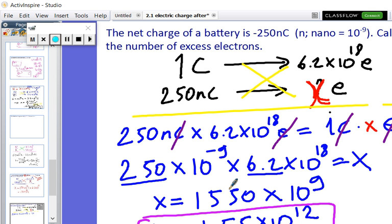...you don't have any units for that. So that many electrons will make up 250 nanocoulombs. Thank you.